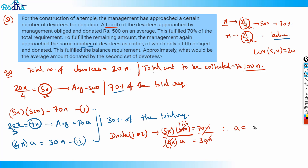So 'a' works out to be 15,000 divided by 56, which is approximately 267–268. So a is roughly 268 rupees. That is the average amount donated by the second set of devotees — that is the answer.